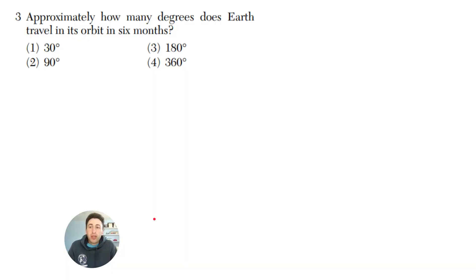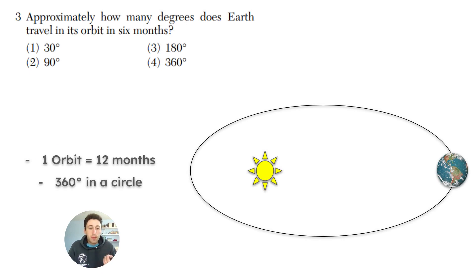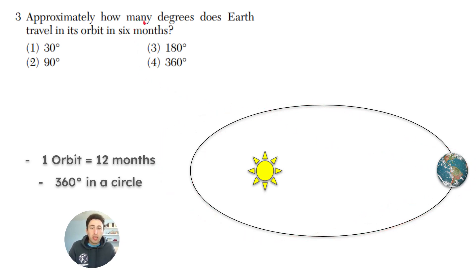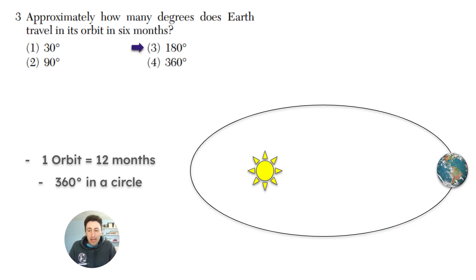Cosmic background radiation is one of the two proofs for the Big Bang, so the answer is going to be one. Question three: approximately how many degrees does Earth travel in its orbit in six months? Earth, like other planets, orbits around the sun. The reference table says it takes 365 days, which is 12 months. Six months is half that time, and there are 360 degrees in a circle. So half of that orbit is 180 degrees — the answer is three.